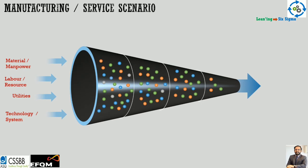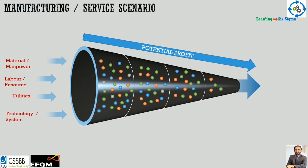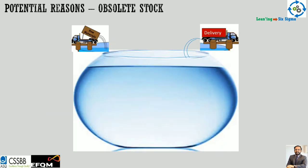In either a manufacturing or service scenario, you send in man, material, manpower, labor, and resources — or in the service industry, utilities, technology, and systems — as inputs into the value chain to convert raw material into a product or information into a service. What an organization can rightfully earn might be 30 percent profit, but at the end of the value chain you earn only a small portion — say eight percent instead of 20 — because in the conversion process there are many places where profit leakage happens.